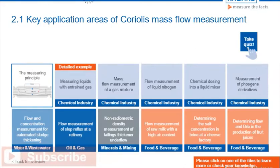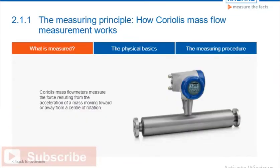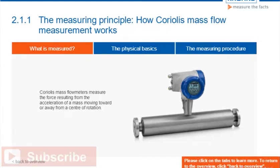Coriolis mass flow meters measure the force resulting from the acceleration of a mass moving toward or away from a center of rotation. Please click on the tabs to learn more about the functioning principle behind Coriolis mass flow meters.